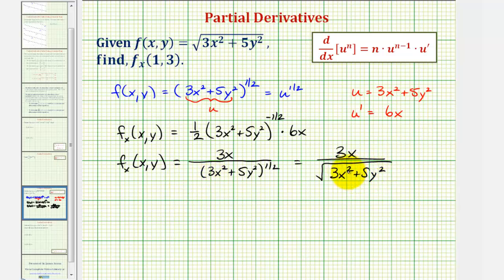Now for the last step, we need to evaluate this at the point (1, 3), which again is going to be the slope of that tangent line that we saw at the beginning.